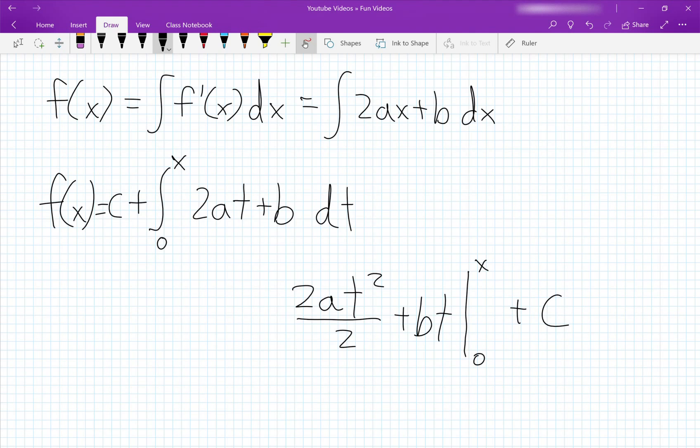And then we take it from 0 to x and we plus c at the end. And when t is x, we just get ax squared plus bx. And when t is 0, that's just 0. So at the end, we get ax squared plus bx plus c all over again.